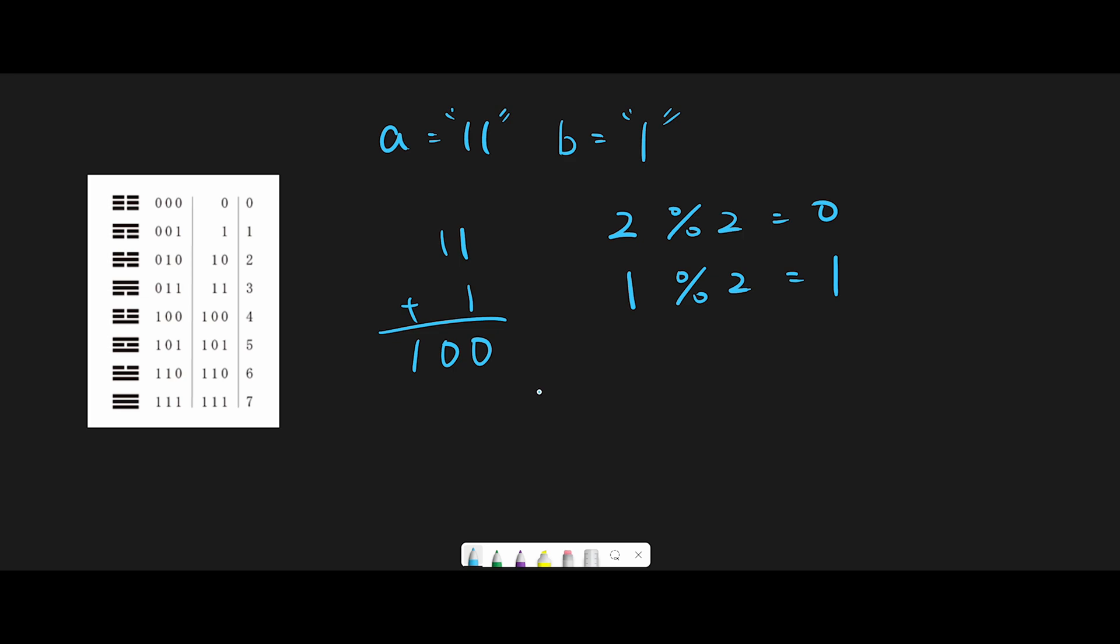And after that, we want to calculate carry. So in this case, we divide by 2, but it's not remainder, just divide by 2. That means, so now we have 2, divide 2 equals 1. And what if we have 1? Divide 2 equals 0. So when we have 2, we have carry here, and when we have 1, we don't have carry.